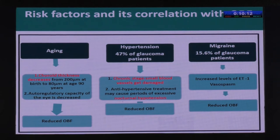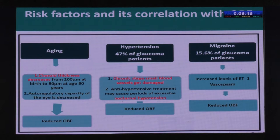47% of glaucoma patients have hypertension. Hypertension can affect glaucoma in two ways: chronic raised blood pressure damages the smaller blood vessels, and if these patients are being treated with antihypertensives, there may be nocturnal hypotension which reduces ocular blood flow. These are the two mechanisms by which hypertension affects glaucoma patients.